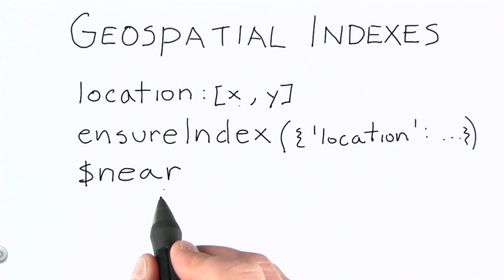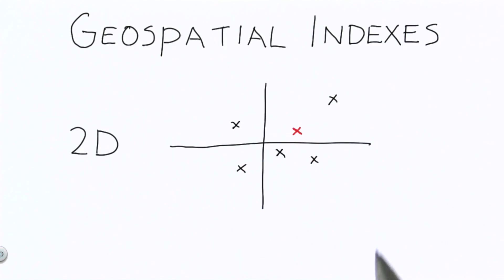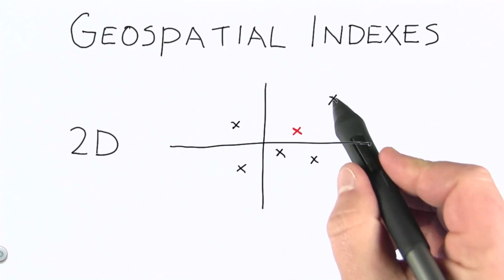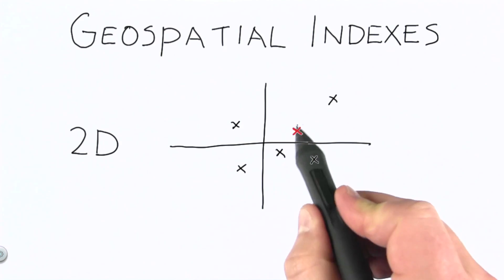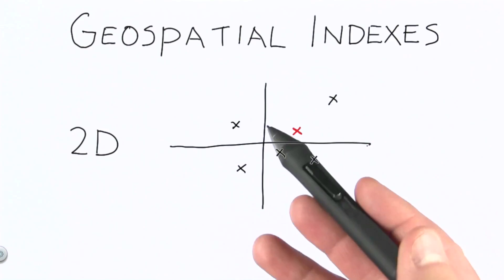Finally, the way we do queries against the geospatial index is through the use of the $near operator. So it's these three steps in combination that allow us to do something like this and get all of the documents that have a location near this one. Let's take a look at this in some code and then we'll do an example query in the Mongo shell.